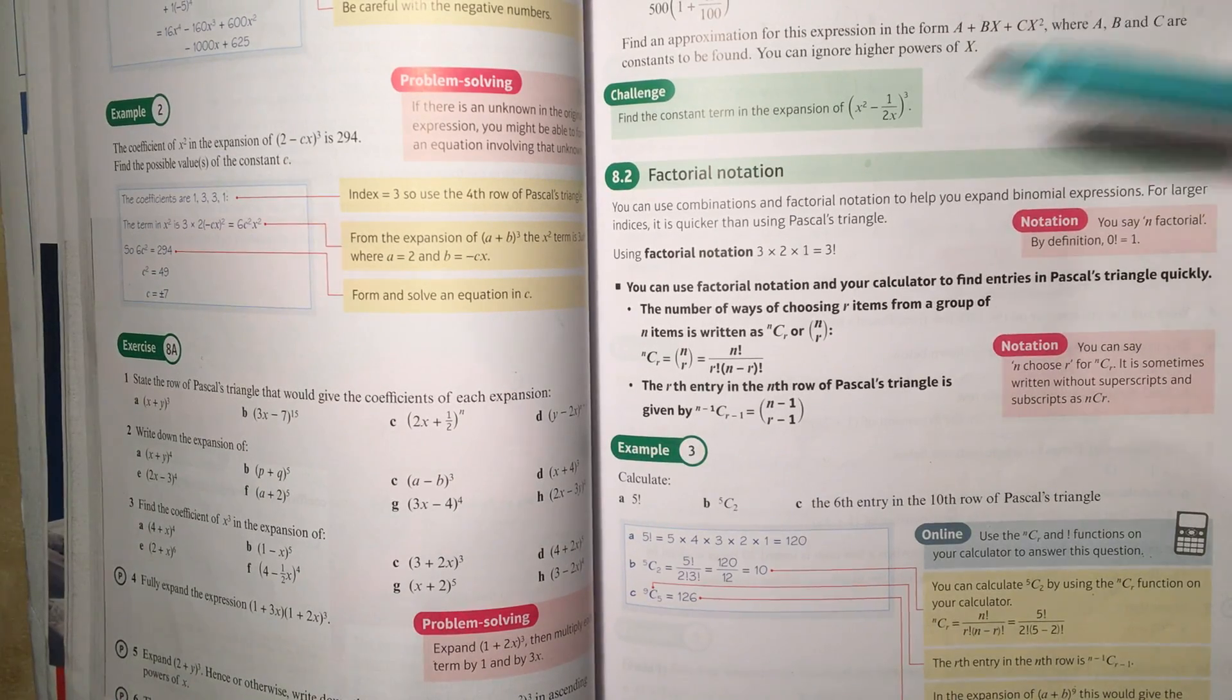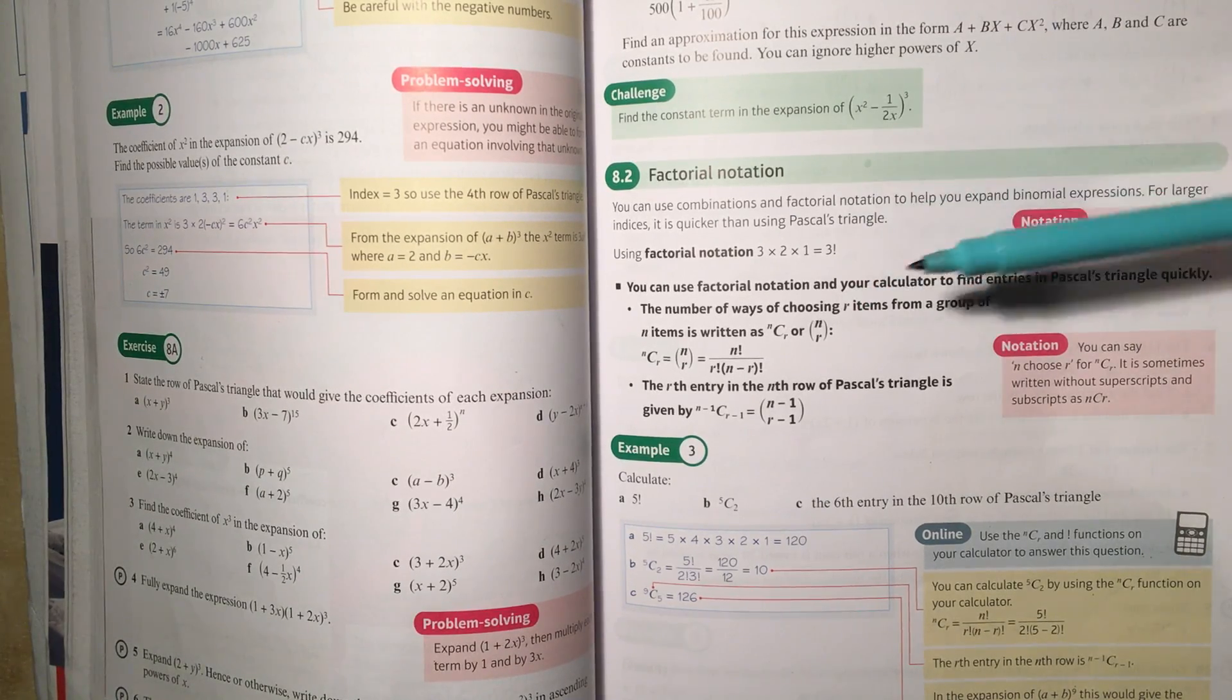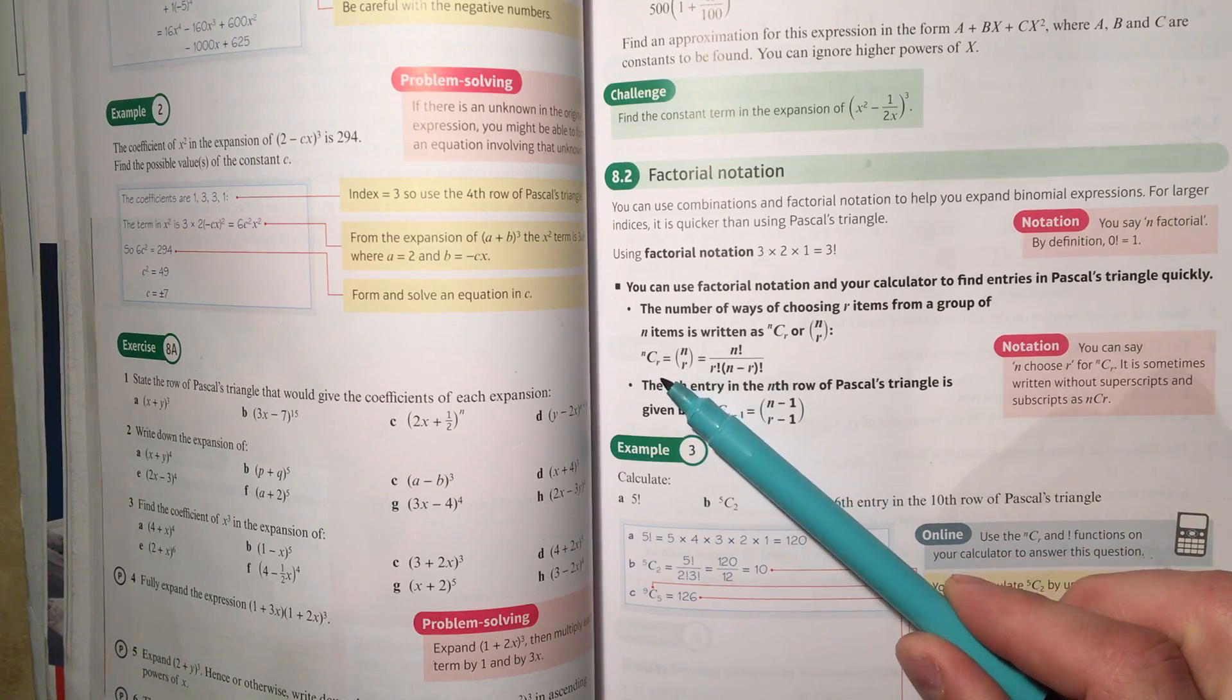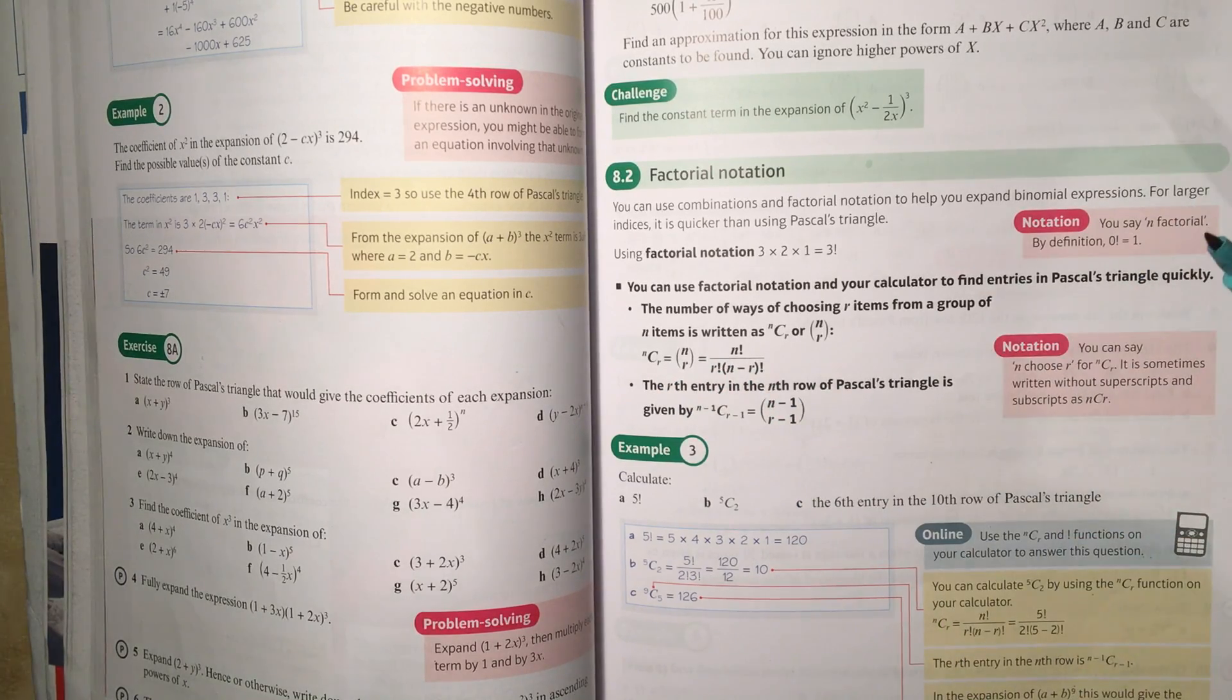In section 8.2, we need to deal with factorial notation and with this notation nCr or n r in brackets like that, written like a vector.